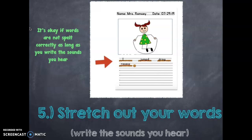Okay, so now we're on step five. We're ready to write our words on the brown lines. For the first brown line, my first word is I. Since I is the beginning of our sentence, we want to make sure it is capitalized. For my second word, the word is jumped.